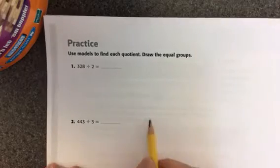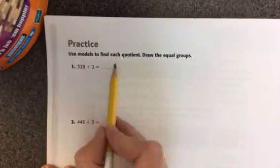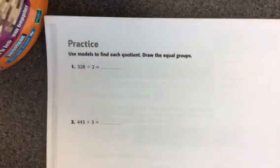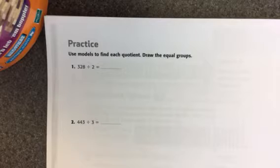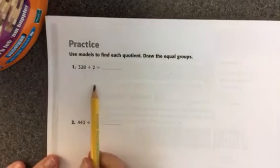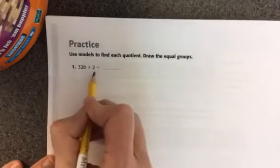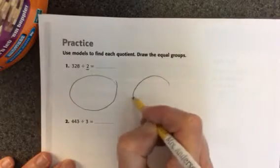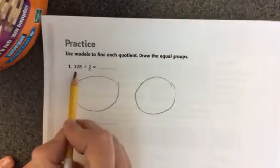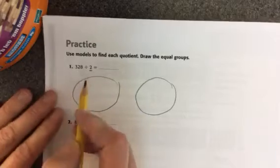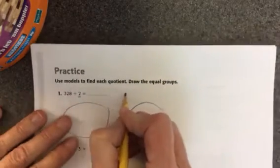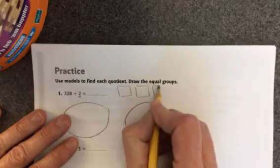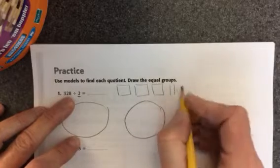All right, now let's do the ones that you're going to do. You're going to use a model to find each quotient and draw the groups. So here I have 328 divided by 2. My divisor tells me how many groups to make. So you'll make 2 groups, and then you'll divide 328 into 2 groups. I know that 300 is going to be here's 300, here's 20, and here's 8.